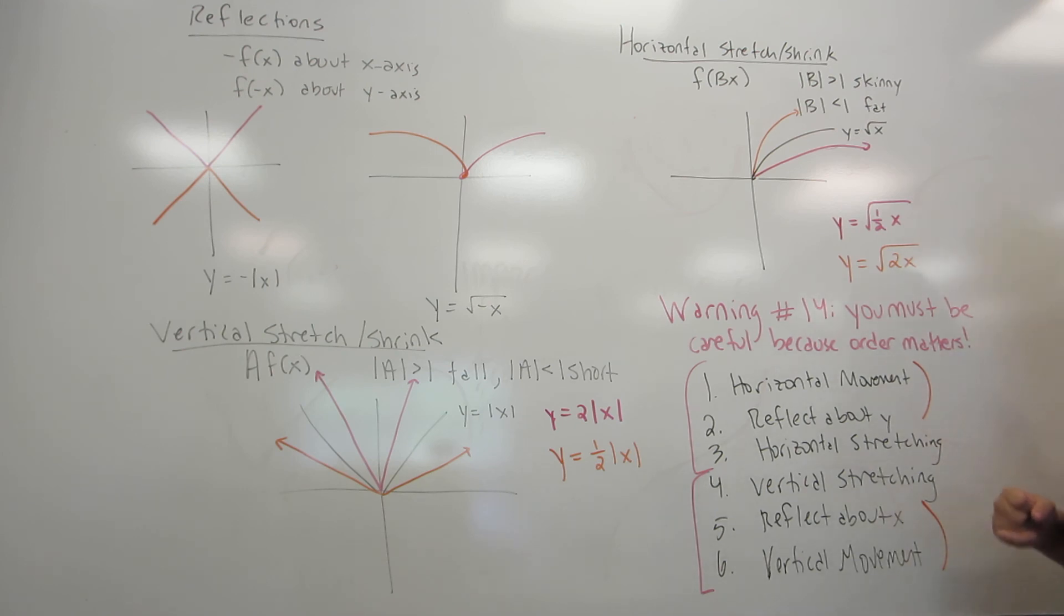Now the kind you do have to be the most careful about are the four marked in orange. Any kind of movement and reflection messes with each other. So if you have both a horizontal movement and a reflection about y, you have to do them in the right order, and you'll get the wrong graph. And same for reflection about x and vertical movement. If you don't do them in the right order, you'll get the wrong graph.